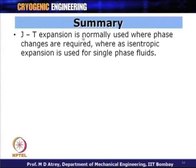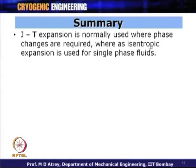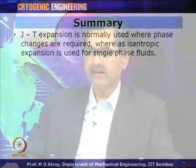JT expansion is normally used where phase changes are required, whereas isentropic expansion is used for single-phase fluids. JT expansion prefers real gas behavior and phase changes, while isentropic expansion using turbo or reciprocating expanders should use single-phase fluid — two-phase fluid can cause problems for these devices.